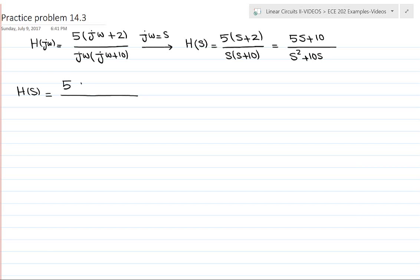In the numerator I have 5s to the power of 1 plus 10s to the power of 0, and in the denominator I have s to the power of 2 plus 10s to the power of 1